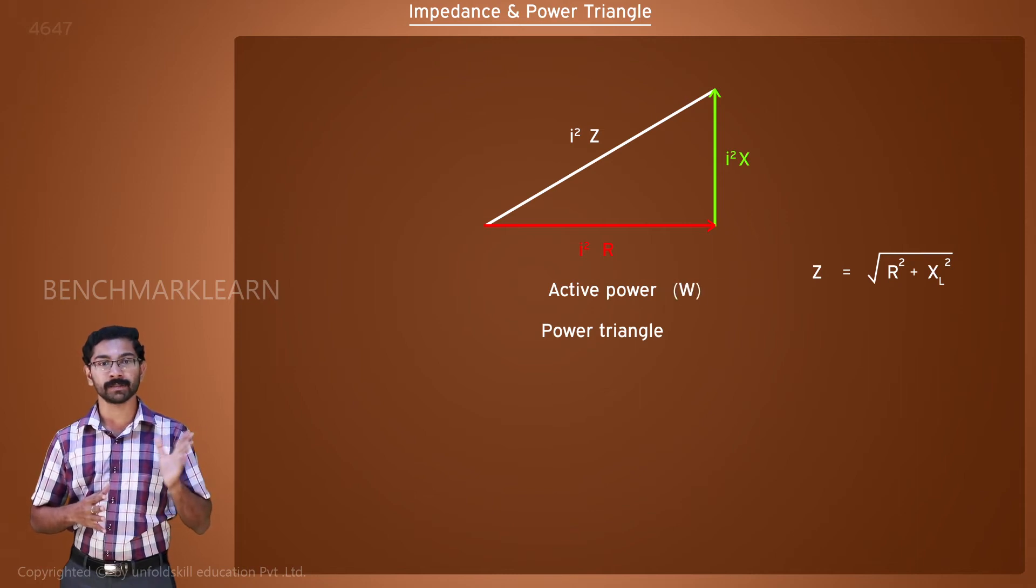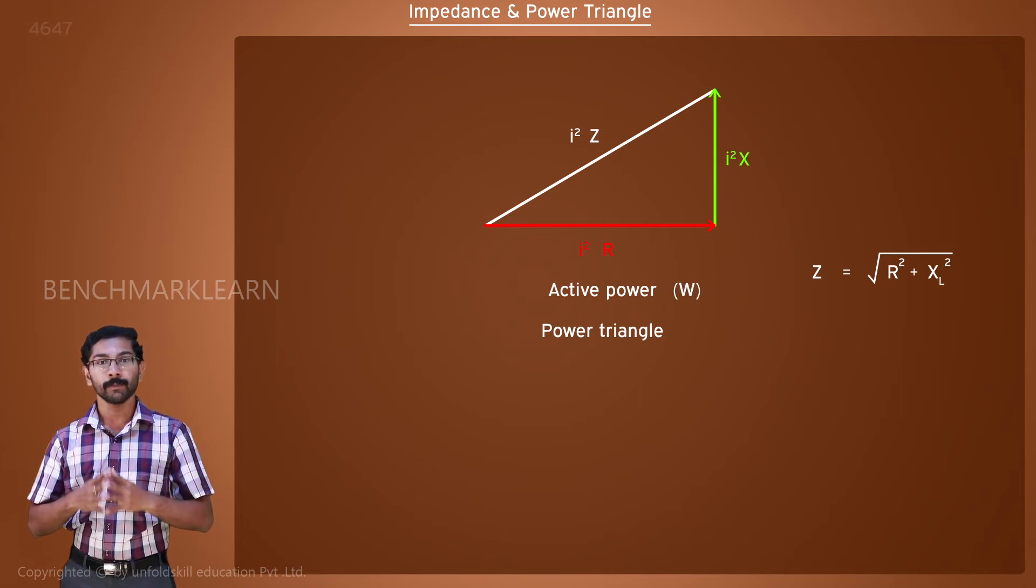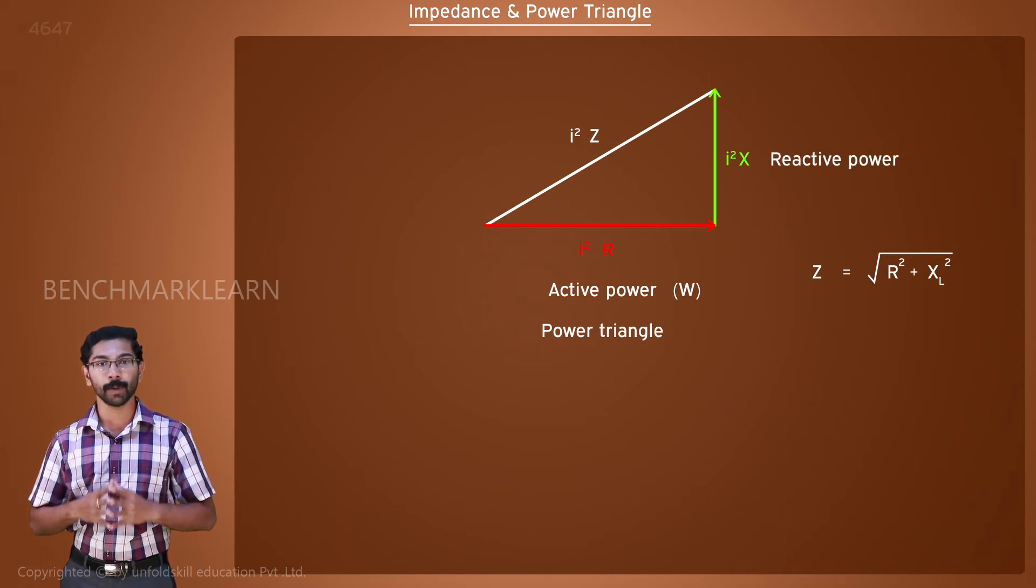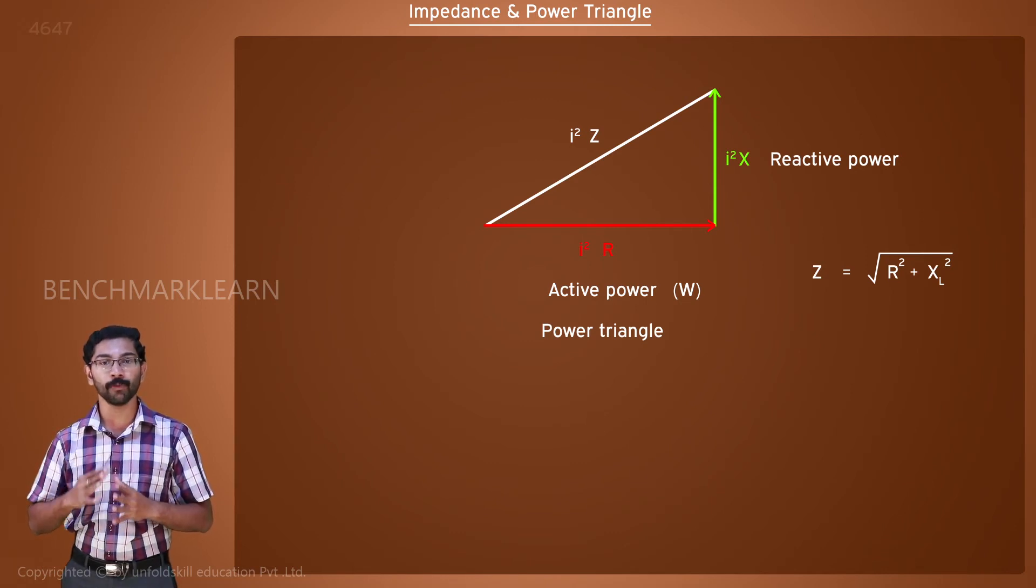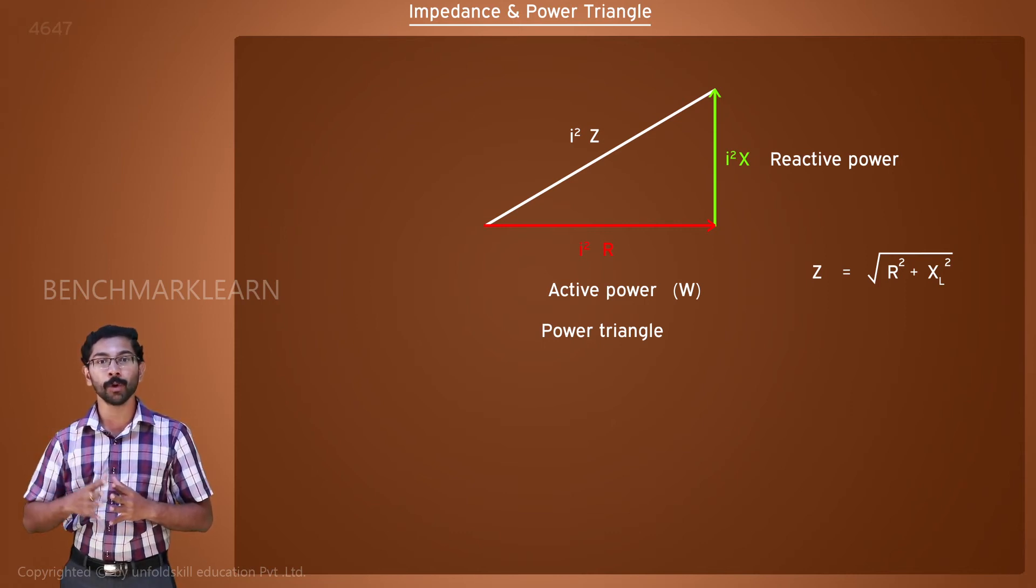It is measured in watts. The product of current squared and reactance gives the reactive power. Reactive power is the power that is not converted to useful work, but that power is transferred from the source to the load during half of the time period of AC and during the other half of the time period, it is transferred back from the load to the source.